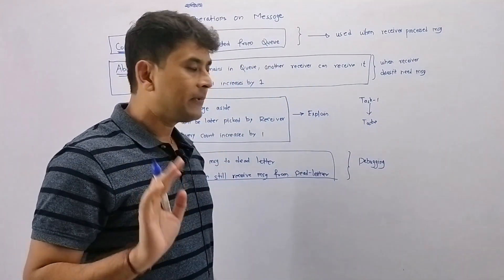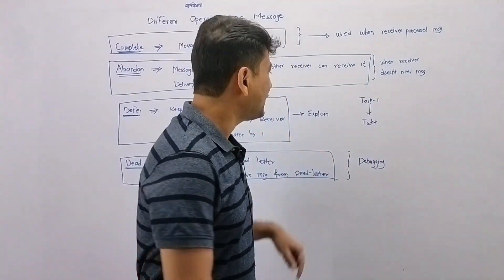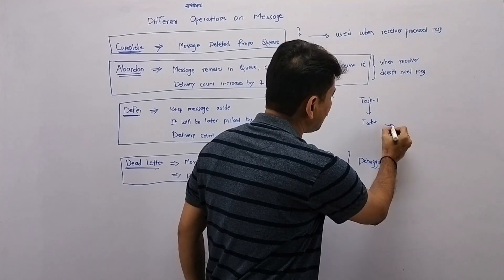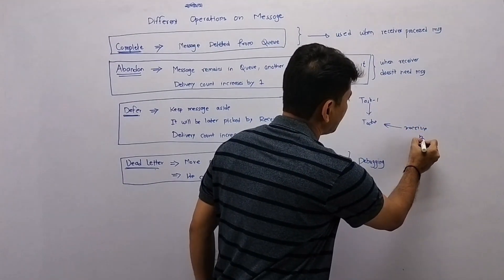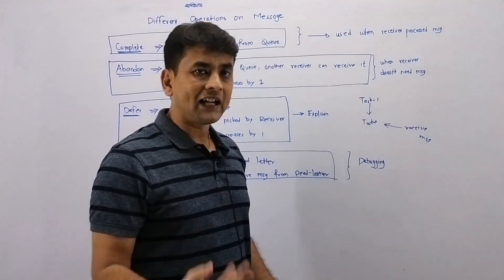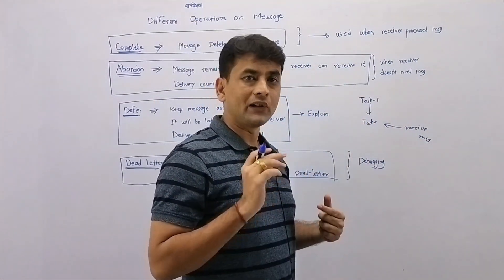Say due to some reason task one is not completed, but this service receives the message which is part of task two. Obviously that service cannot perform task two because task one is not completed.